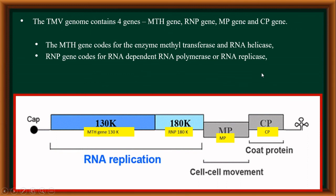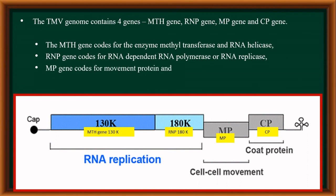The third gene is the MP gene, which codes for movement protein, and this protein mediates the cell-to-cell movement of viral RNA in plant tissues. The last gene is the CP gene, which codes for the coat protein or capsid proteins. So this is about the structure of tobacco mosaic virus.